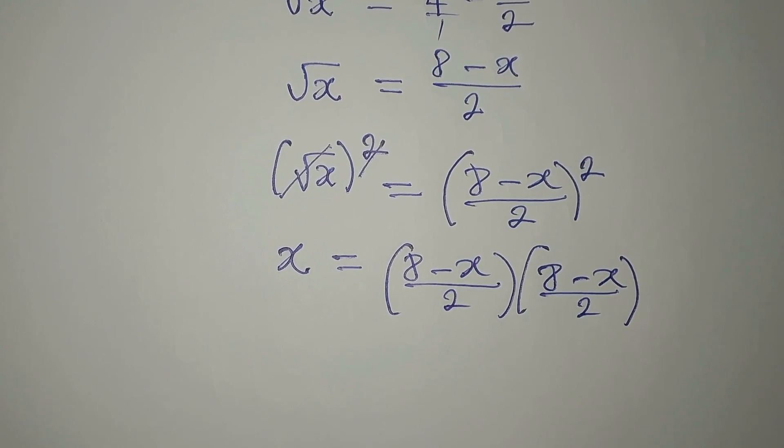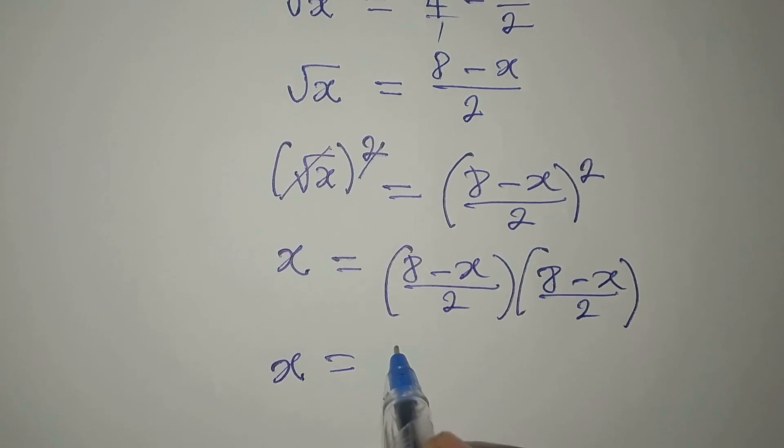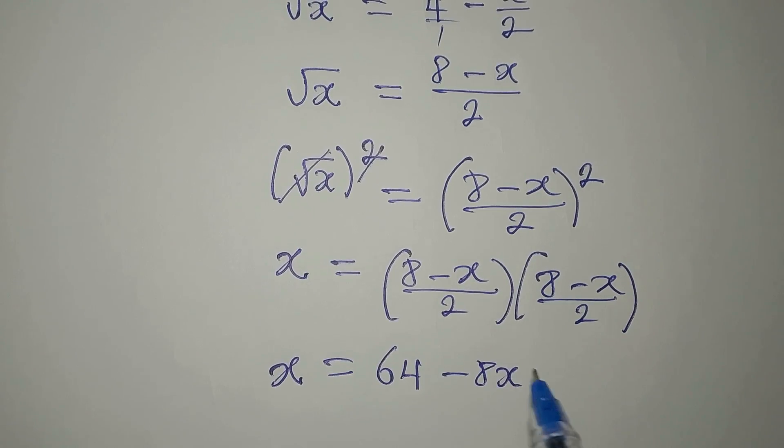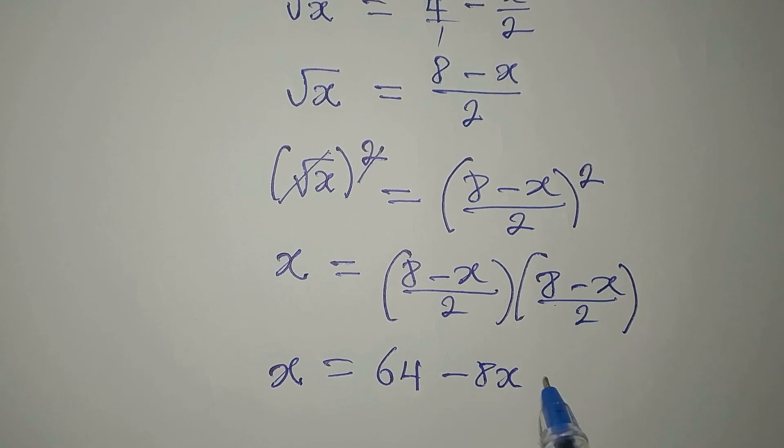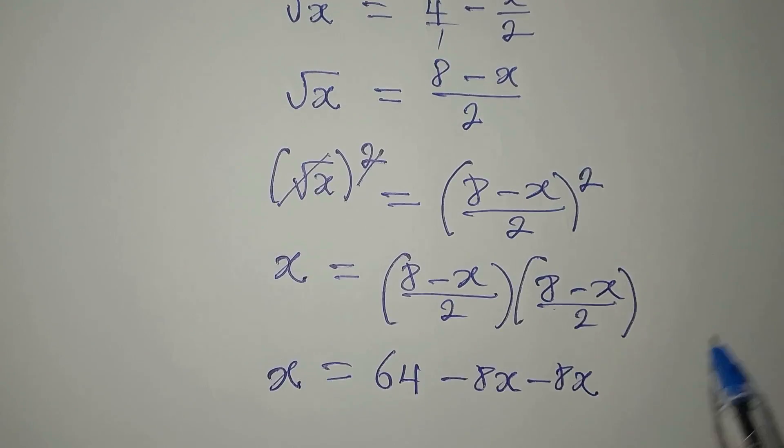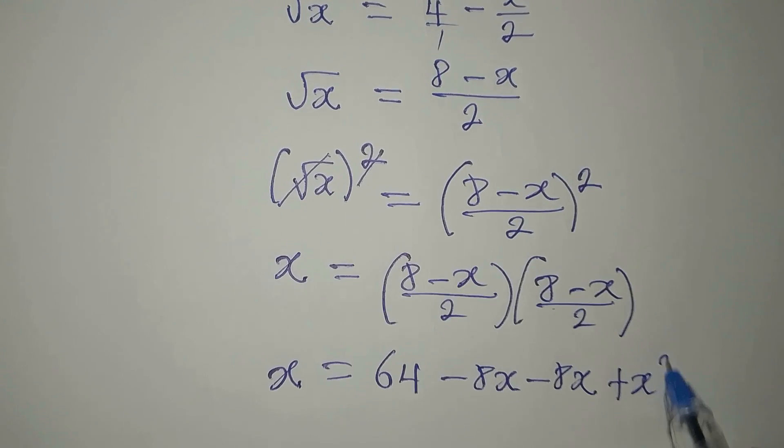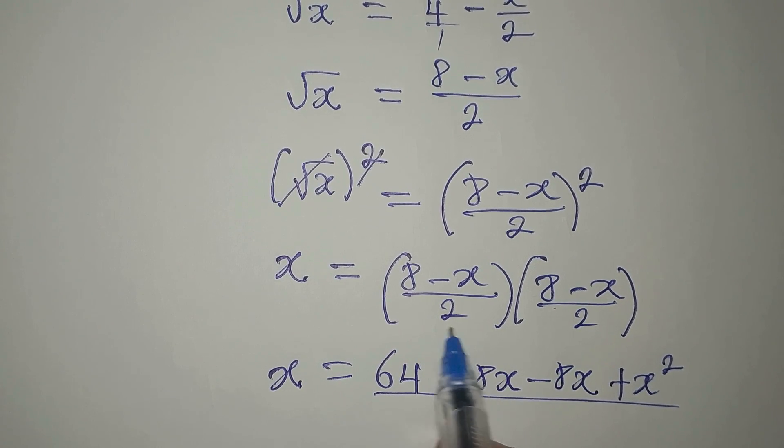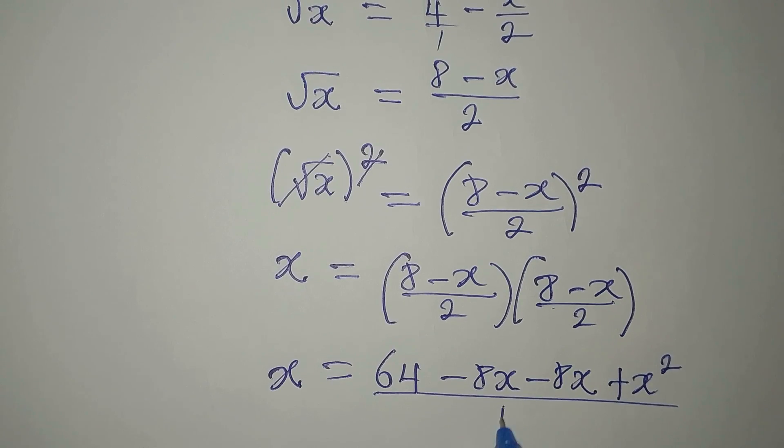Now let us multiply this. So we have x to be 8 times 8 is 64, 8 times minus x is minus 8x, minus x times minus x is plus x squared. All of this will be 2 times 2, we divided by 2 times 2. 2 times 2 is 4.